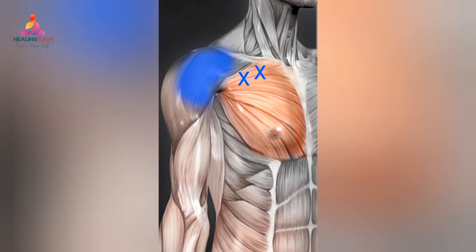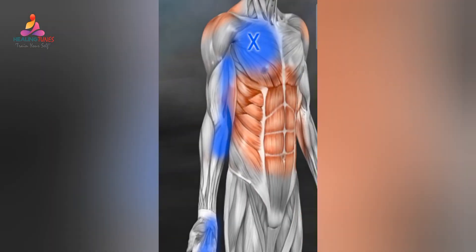The pectoralis major muscle group is the large flat muscle found in the upper chest region. The muscle has four overlapping sections that attach to the ribs, collar bone, chest bone, and upper arm bone at the shoulder. This muscle group contracts as you push with your arms in front of you and when you rotate your arm inward towards your trunk. The pectoralis major contains up to five different trigger points that refer pain in the chest, shoulder, and breast region. Additionally, pain or numbness may radiate down the inside of the arm and into the fingers.